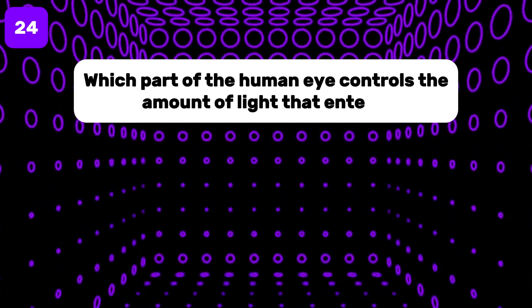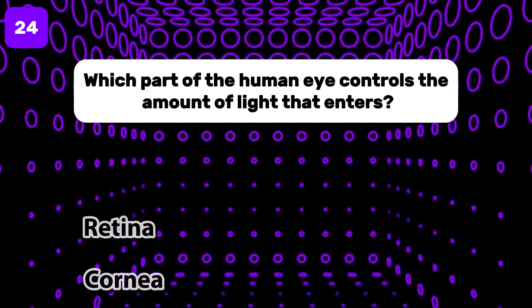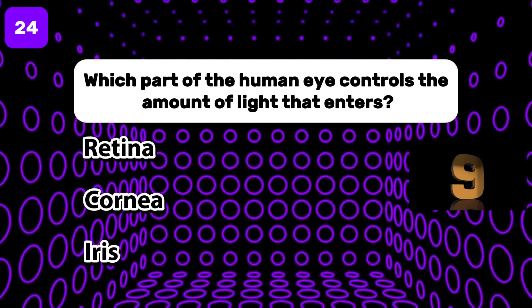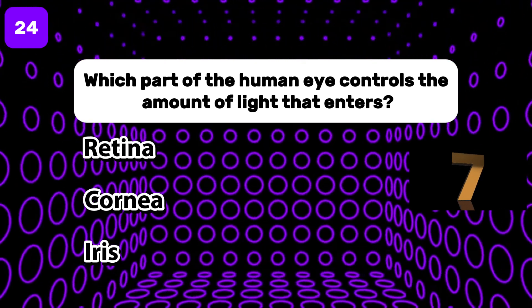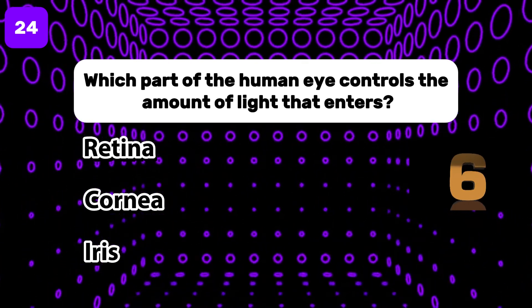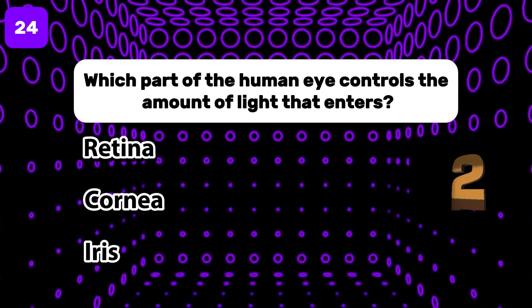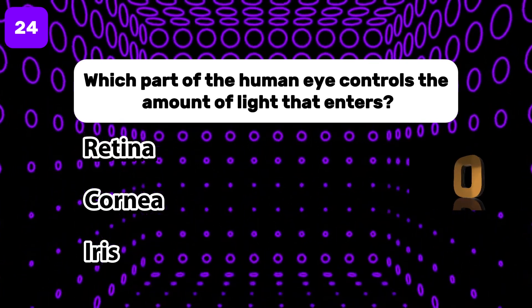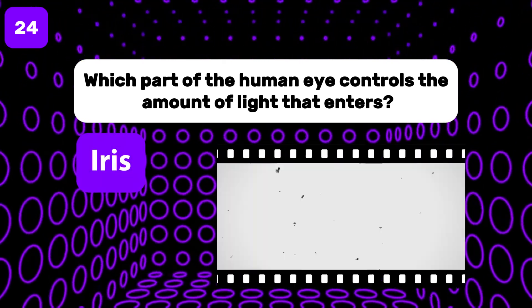Which part of the human eye controls the amount of light that enters? The answer is iris.